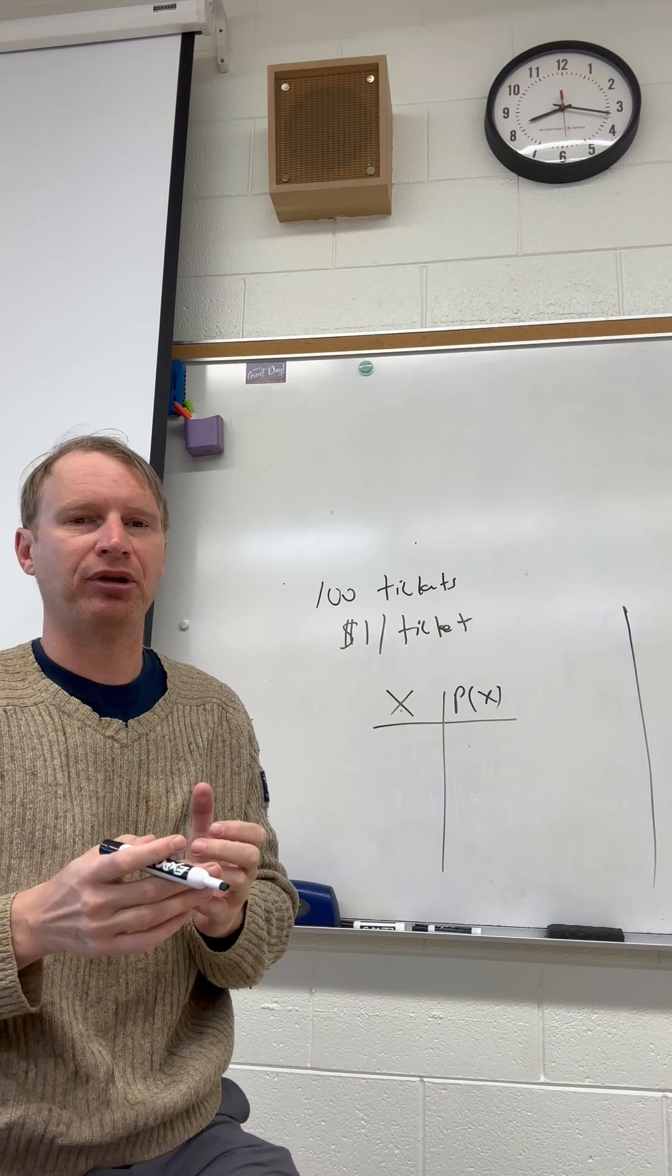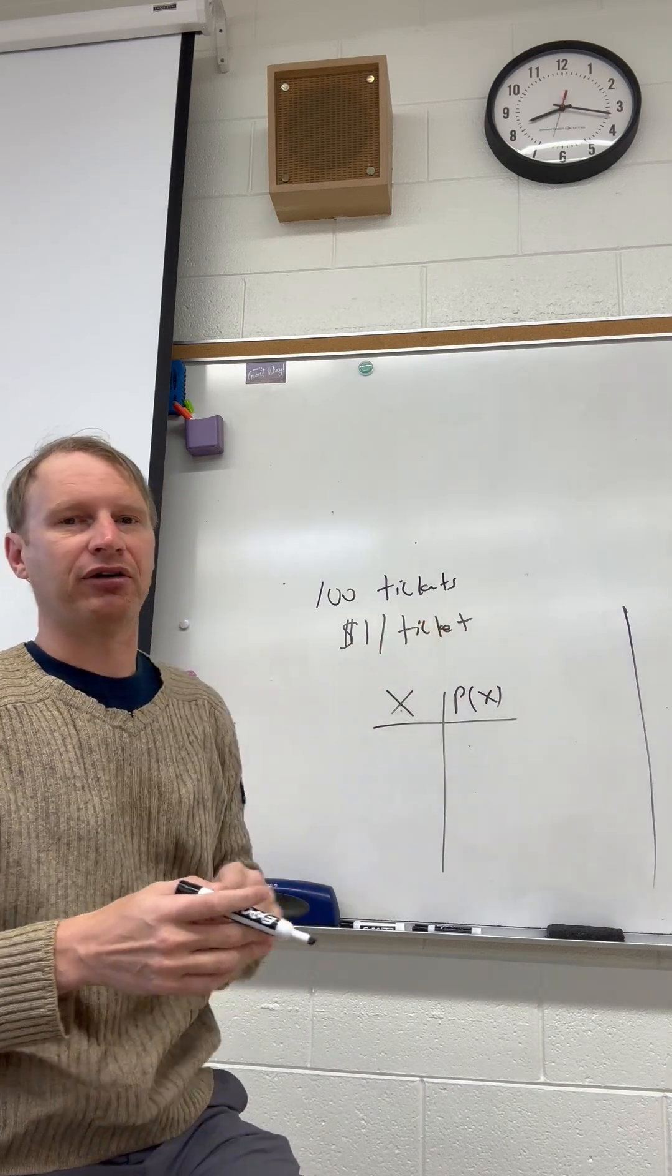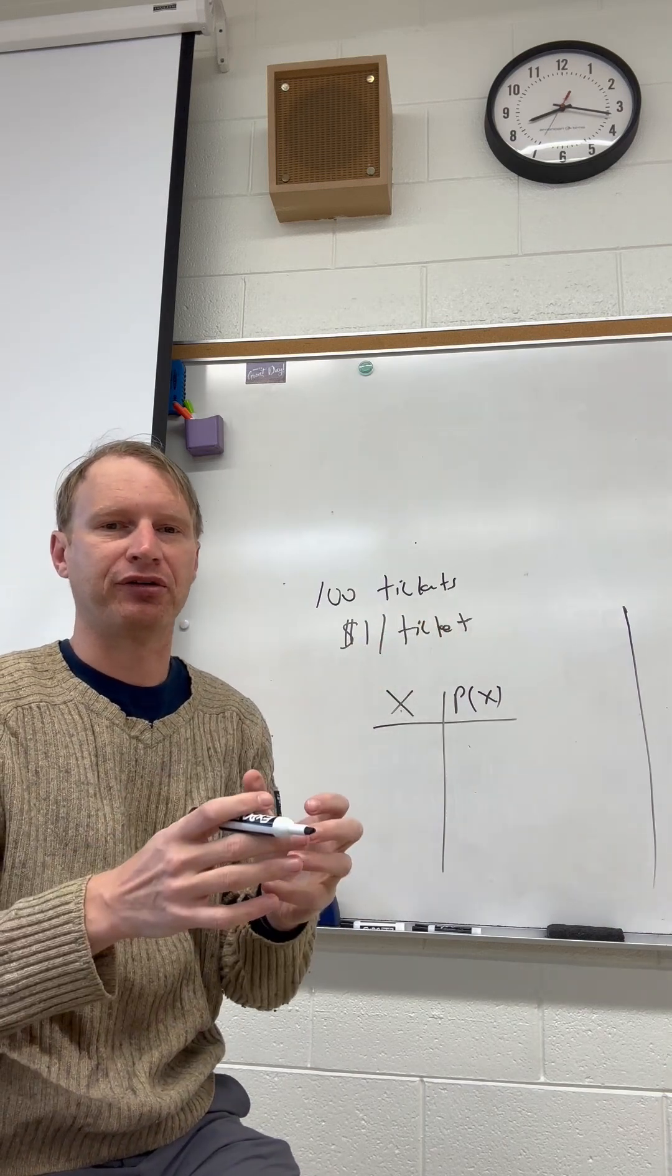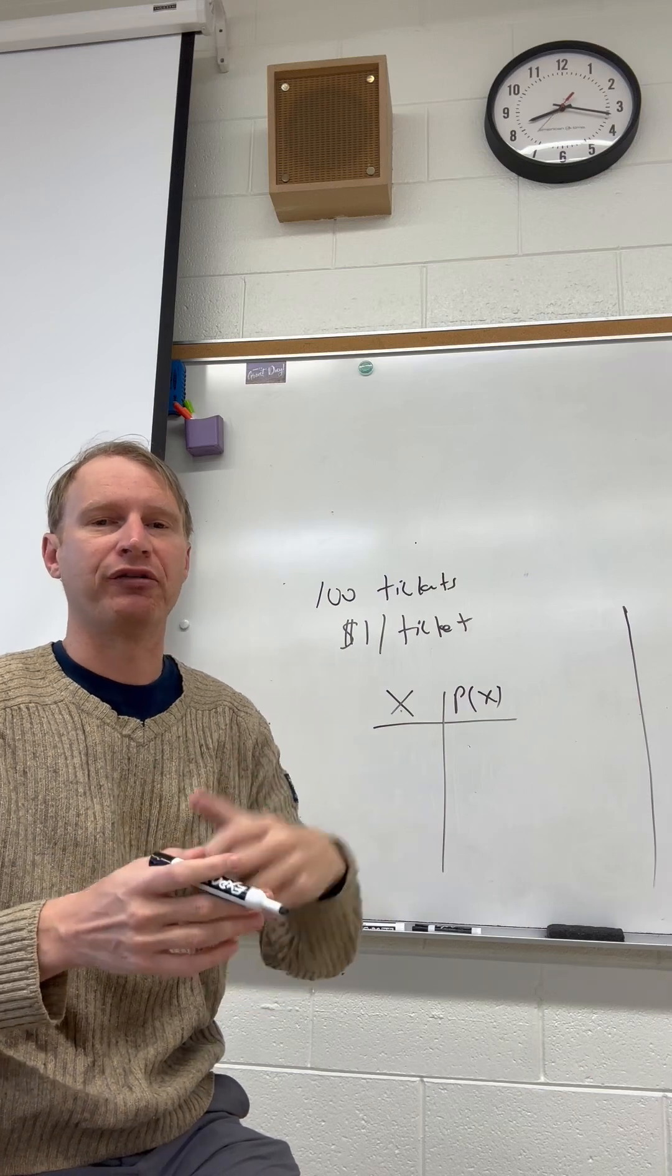Let's come up with a simple example. Let's say there's 100 tickets we're going to sell at a dollar a ticket. So that means there's $100 in the pot and you win half of that, so you win $50 if you win.